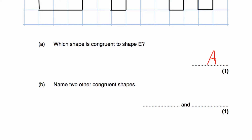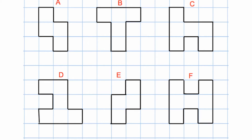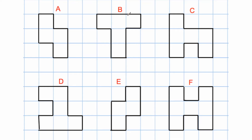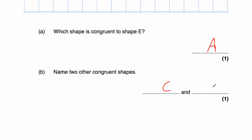The question also says: name two other congruent shapes. B is a T-shape and there's no other T-shape, so B is not congruent to anything. C is an H-shape, and if you spin C around, you get D. So C and D are congruent — they're the same shape and size, just one has been rotated. F is not congruent to anything either. So shapes C and D are congruent to each other.